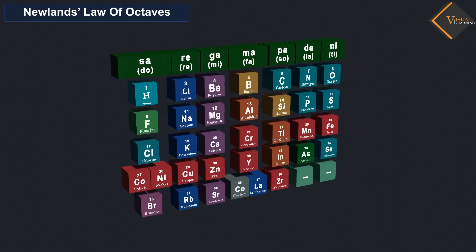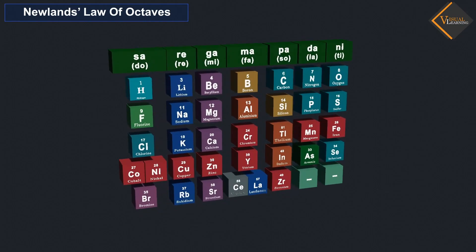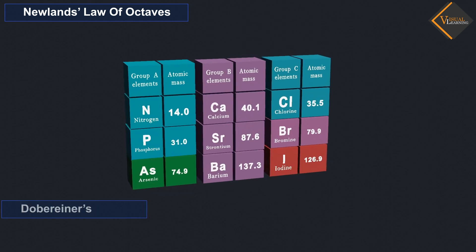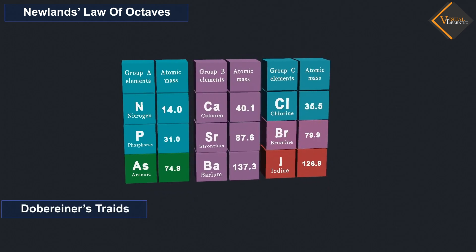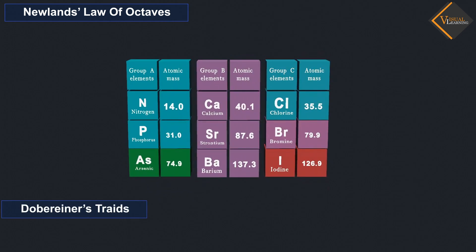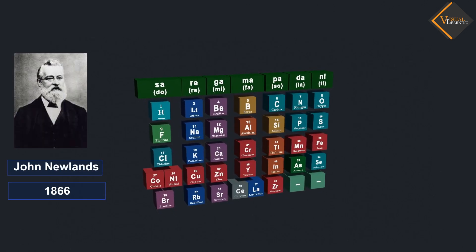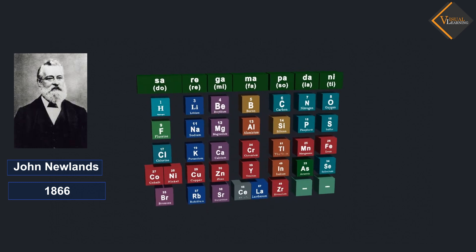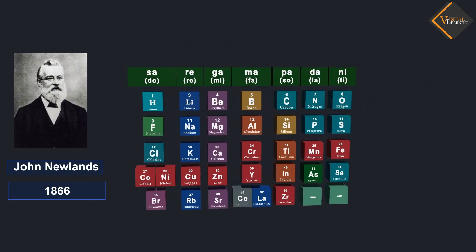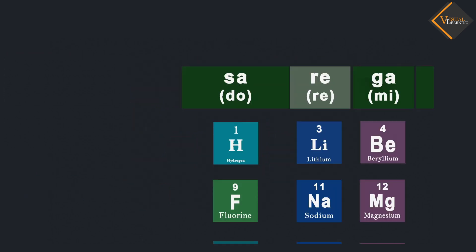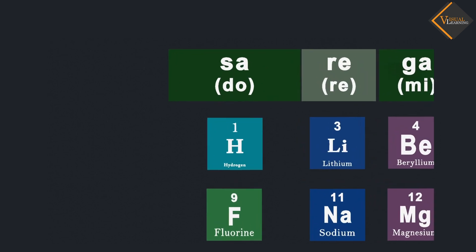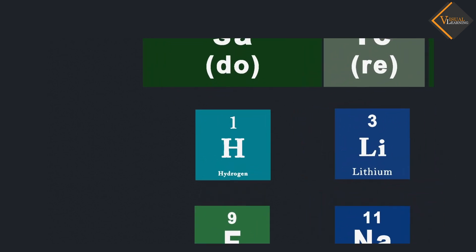Newland's Law of Octaves. The attempts of Dobereiner encouraged other chemists to correlate the properties of elements with their atomic masses. In 1866, John Newlands, an English scientist, arranged elements in the order of increasing atomic masses. He started with the element having the lowest atomic mass, hydrogen.